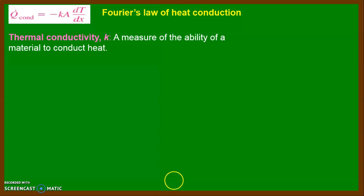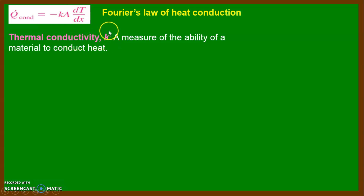First we discuss K. K is a physical quantity called thermal conductivity, indicated by K. The definition of thermal conductivity is a measure of the ability of a material to conduct heat — it shows in what fashion any material conducts heat.